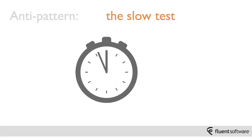Our next anti-pattern is the slow test. This is something we've touched on before when talking about our test principles. We want tests to be able to run quickly, so that developers are in a position to run these tests all the time. Every time they're making a change, they should be able to run a test and make sure they haven't broken any existing functionality at all.